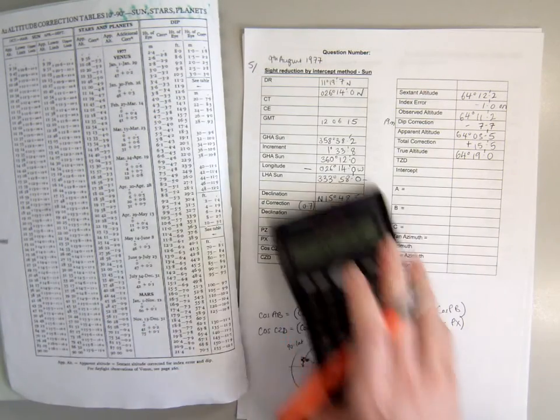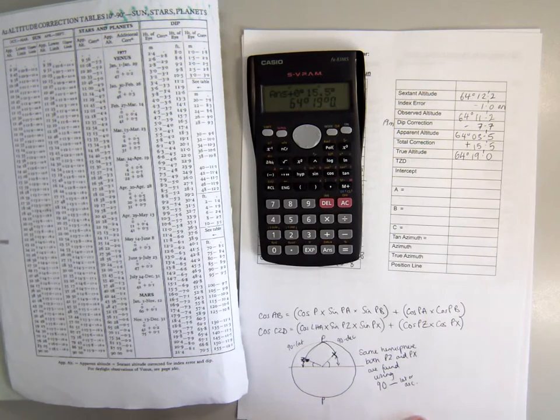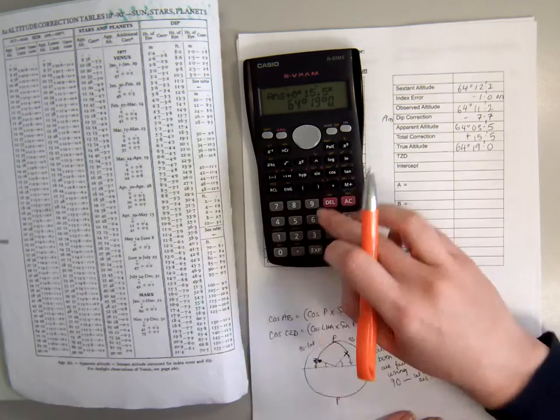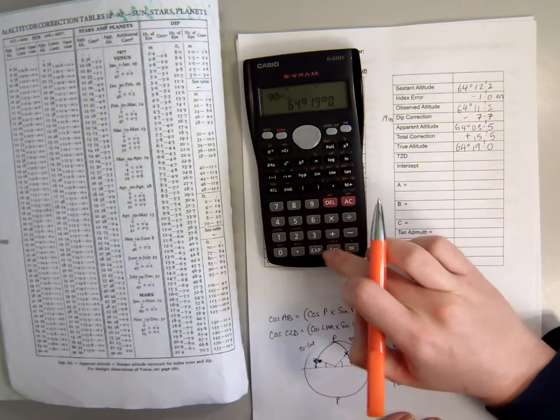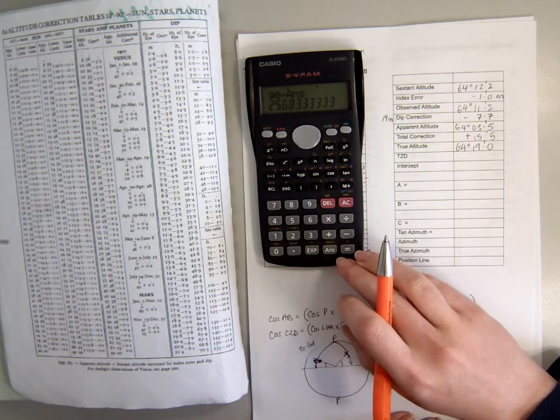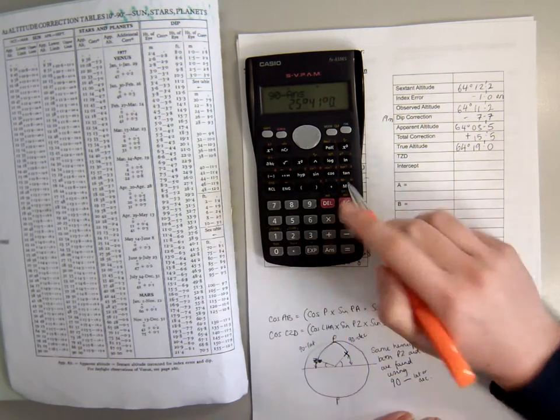Finally, to turn that into a TZD, I'm simply going to subtract it from 90, just as we did with the MZD for the Merpass observation. So 90 minus 64 degrees 19 gives us 25 degrees 41.